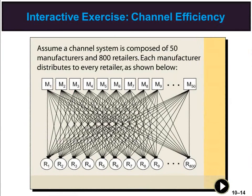A graphical example shows how adding a wholesale level can in fact reduce total transportation costs in the channel of distribution. For example, with 50 manufacturers and 800 retailers in a channel system, total transaction costs with no wholesale level can be compared to total transaction costs in channels that contain one or two wholesalers.